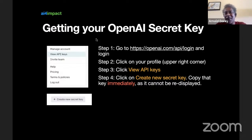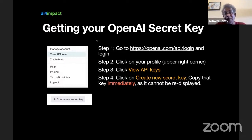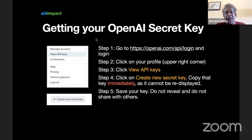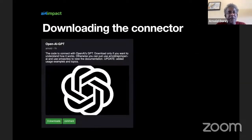Click on that and it will create a key for you. Don't click off the display — highlight it, copy it, and store it in a text file somewhere safe on your system, because it cannot be redisplayed. You can create as many keys as you want, but I'd advise one key per chatbot so you can turn keys on and off as you wish. Save your key and do not reveal it or share it with anyone. That's all you need from OpenAI — just the secret key.